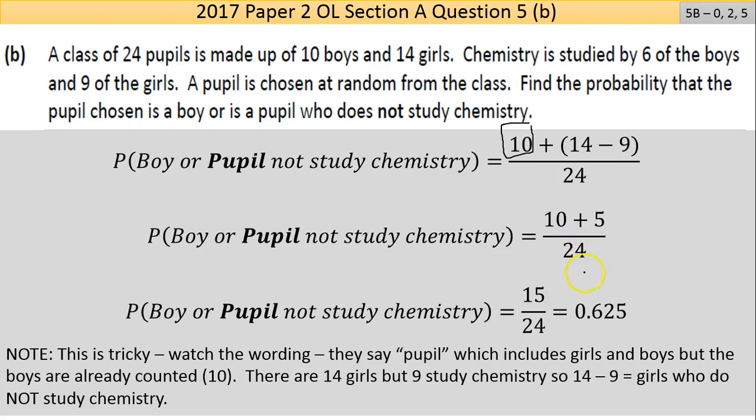You end up then simplifying the fraction: 15 over 24, which as a decimal is 0.625. Now again, that is very advanced probability. If you're seeing a question like this, how do I get something out of it? An attempt is worth two marks. Even putting the 10 over 24 or the 14 over 24 should get you at least the partial marks.